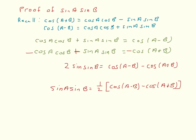The proofs for the other two identities are very similar. The proof for cosine of a cosine of b uses those same sum and difference identities for cosine, and you can almost see exactly how that would work out. The proof for sine of a cosine of b uses the sine sum and difference formulas.